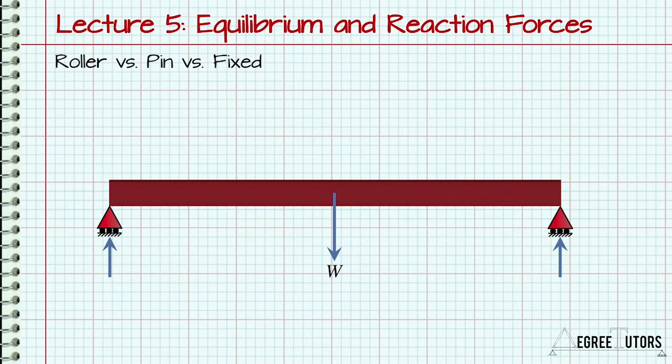There's no resistance to any horizontal forces. Therefore, if a horizontal force was applied to the beam, no matter how small, the beam would accelerate laterally in the direction of the force.